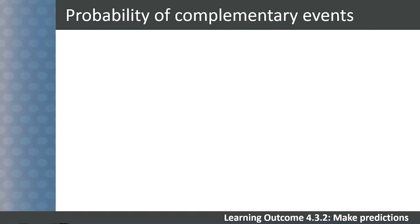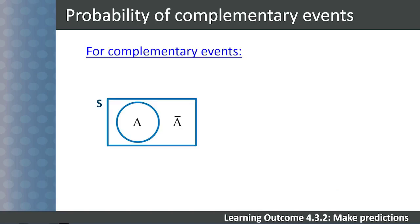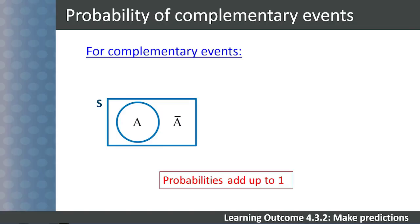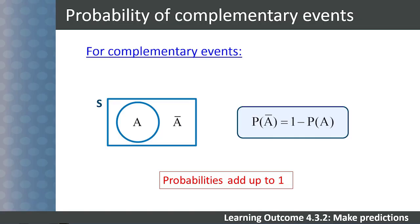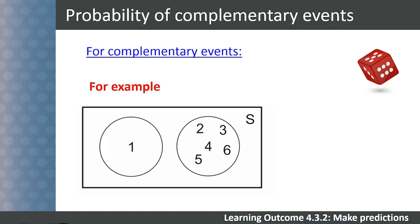The last important events that students need to work with are complementary events. Remember that a complementary event is all the events in the sample space other than the given event. The probabilities of all events in the sample space add up to 1. Two events are complementary if their combined probabilities equal 1. We say that the probability of not A equals 1 minus the probability of A. For example, the probability of getting a 1 on a die is 1 out of 6, and the complement is the probability of not getting a 1, which is 1 minus 1 over 6, giving us 5 over 6.